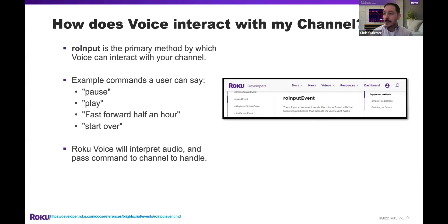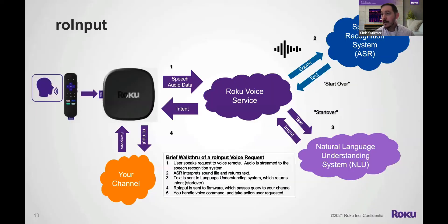How does voice interact with your channel? We have a published set of APIs known as row input — the primary method by which voice can send details or interact with your channels. Example commands the user can say include play, pause, fast forward half an hour, start over. Similarly, we interpret the audio and pass a command to your channel to handle. In this row input example, the user said 'start over' — the case of my wife who fell asleep and is trying to watch the episode the next day. The audio streams through the box up to the cloud, speech recognition turns that sound into words: 'start over.' We interpret that as a command belonging to your channel, pass it back to the box, your channel receives it and decides what that means in the context of your application.